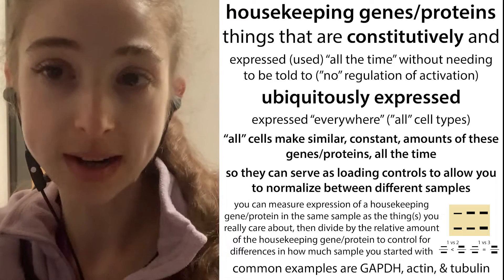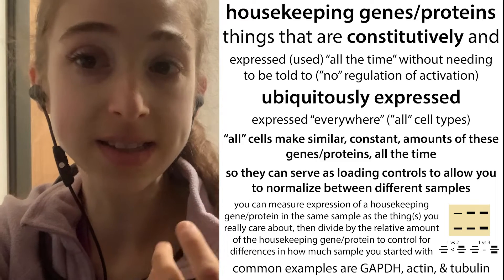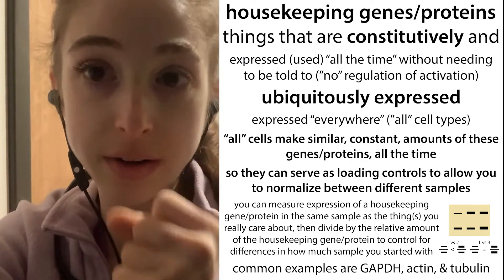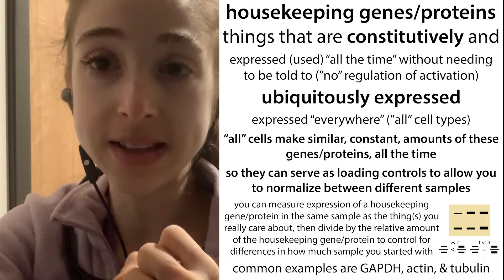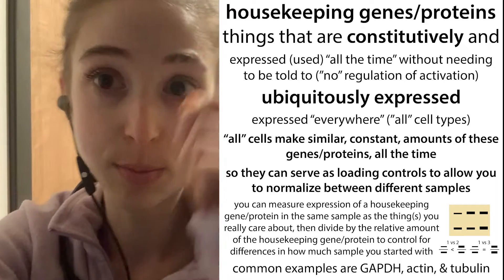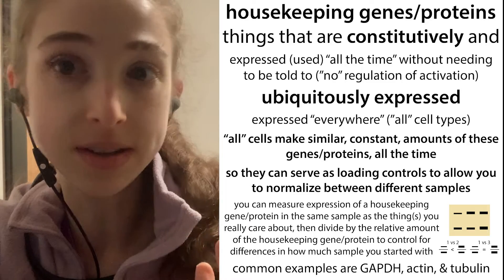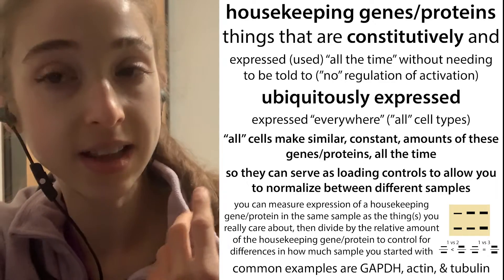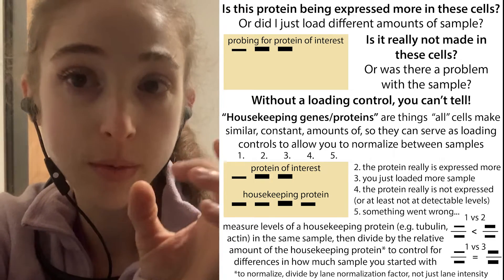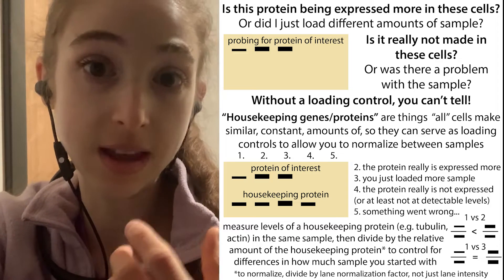There are also genes that your body needs all the time, things like actin, which makes up your cytoskeleton — the little network of tubules inside of your cells that gives them structure and acts to transport things from one part of a cell to another. These sorts of things your cells need all the time; we call these housekeeping genes, and they allow us to control for the levels of the total sample so that we can compare between different samples.